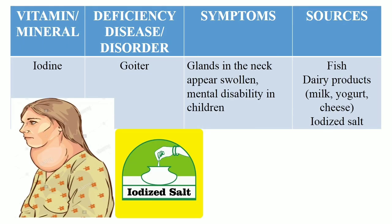Deficiency of iodine causes a deficiency disease called goiter, in which the thyroid gland present in the neck swells abnormally. Deficiency of iodine leads to poor growth and poor development of the body, which leads to mental disability in children. The person should include food rich in iodine such as dairy products like milk, yogurt, cheese and iodized salt.